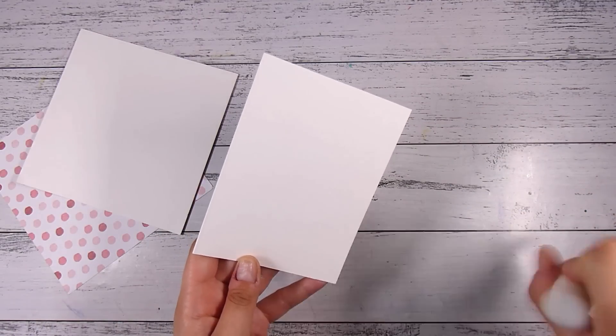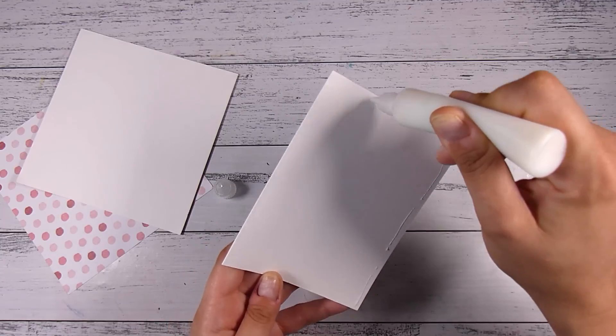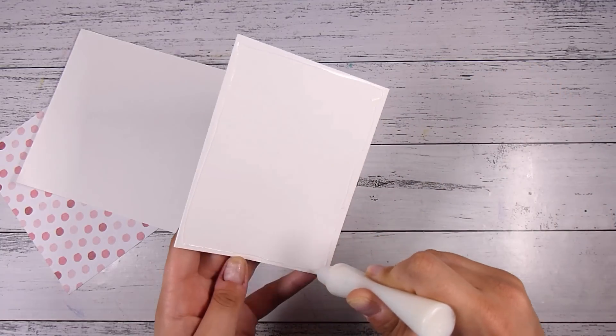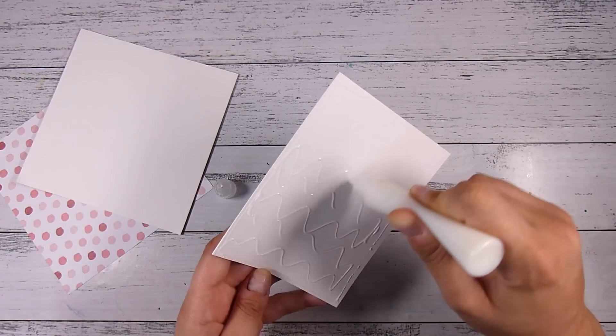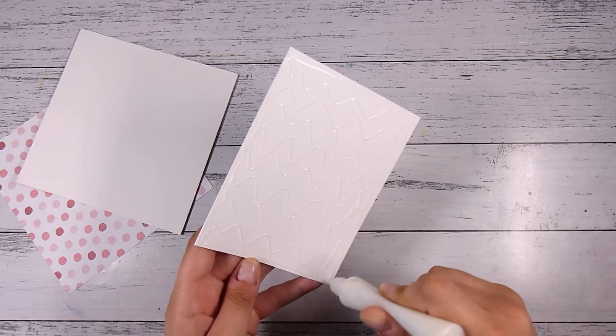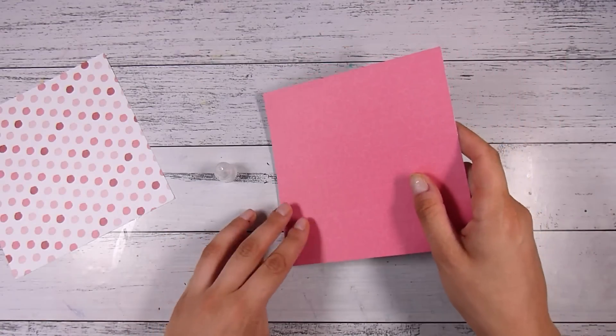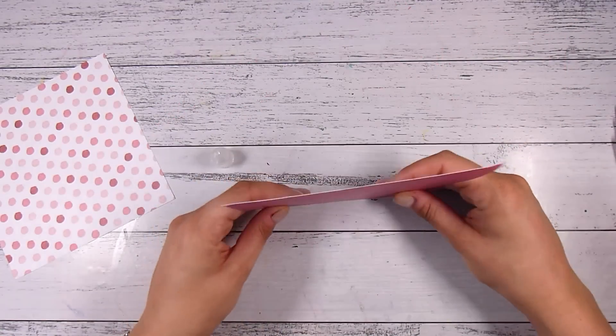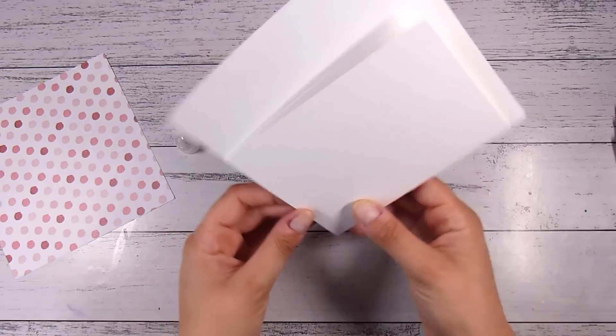I also have my plain card base here. At the moment this measures four and a quarter by five and a half inches and this video today is definitely just the way that I find it easiest to do things. I find it easiest to cover my entire card front in my base color pattern.